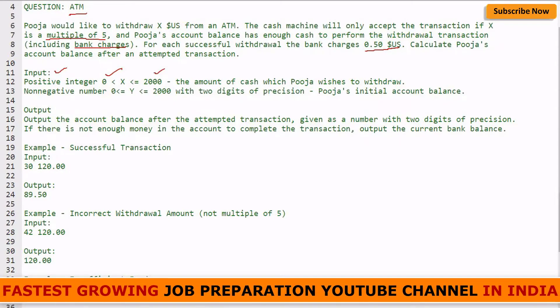Another input will be a non-negative number Y which should be 0 to 2000 with two digits of precision - Pooja's initial account balance. This minimum amount should be there, otherwise she cannot withdraw X value. You have to check one more condition: Y should always be greater than or equal to X, otherwise it will become invalid.